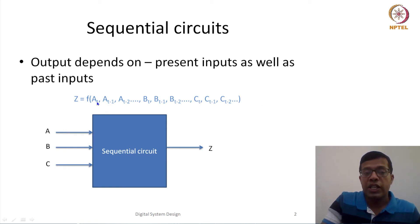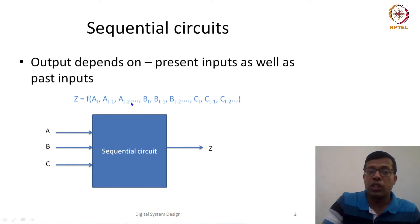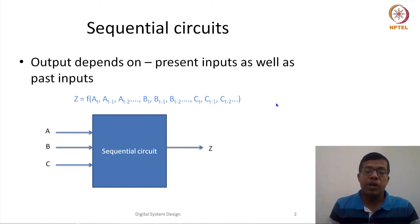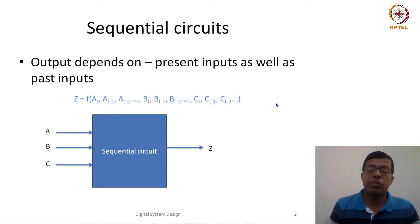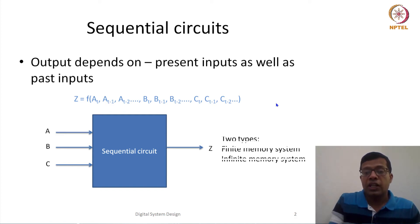These inputs are recorded at discrete time steps. At t=0 (current time) the value of A is A(t), and at one unit before the present time, t−1, the value of A is A(t−1), and so forth for B and C. So essentially Z depends on the current inputs A(t), B(t), and C(t) but also on their previous values.